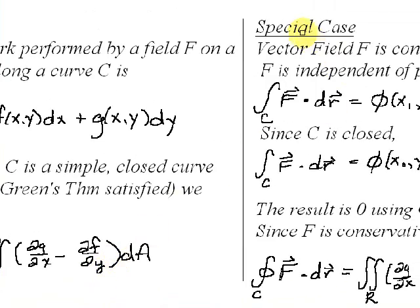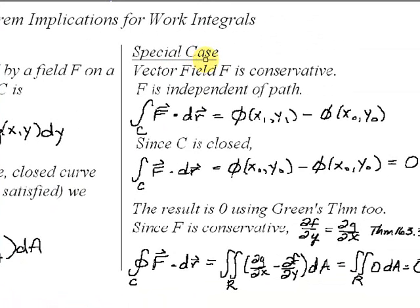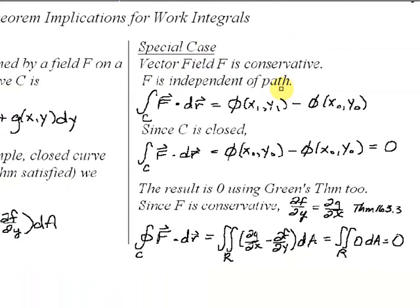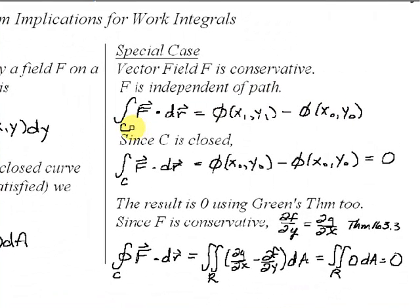I'd also like to mention a special case that occurs — this came up in the last video segment. We had a vector field F that was conservative, which means that F is independent of path. What that means is that the work done by the vector field on a particle only depends on where the particle started and where it ends, not what path it takes. The fundamental theorem of line integrals tells us that to find this integral, we simply subtract the value of phi — where the gradient of phi is F — at the ending point minus phi at the starting point.